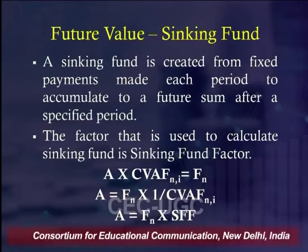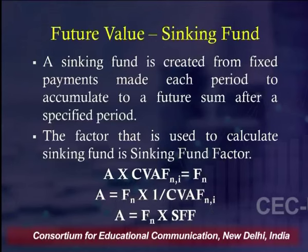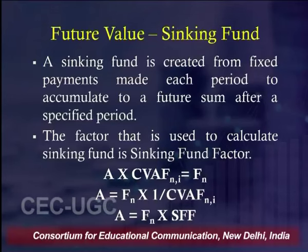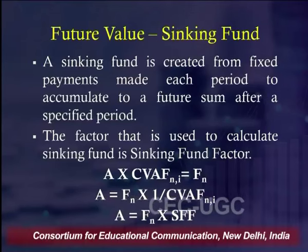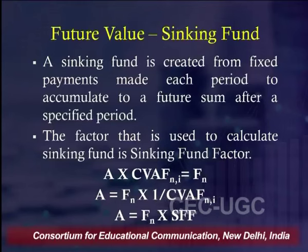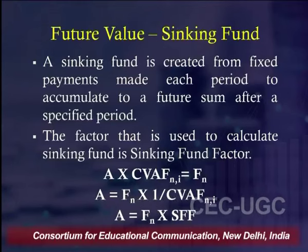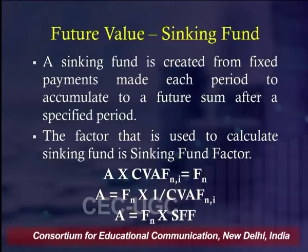A sinking fund is similar to the future value of annuity, but here the annuity amount 'A' is unknown — we need to find how much to set aside each year. We rearrange the formula: A = FN / CVAF, where 1/CVAF is called the sinking fund factor (SFF) for N years at interest rate I.